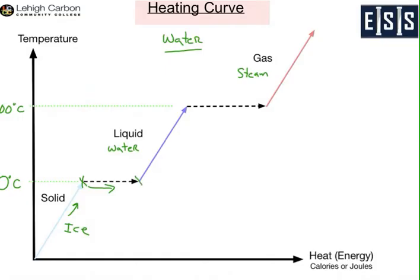All the energy you give it over this point is going directly into converting the solid ice to liquid water. And you stay at zero until you hit this point — at that point, you have 100% liquid water, there's no more ice. You're at zero degrees centigrade, and any more energy you provide will now raise the temperature of that water.